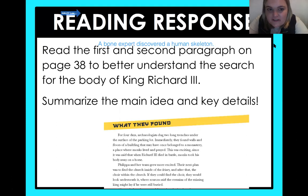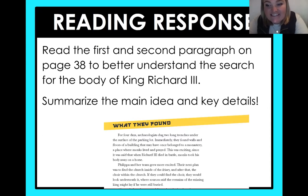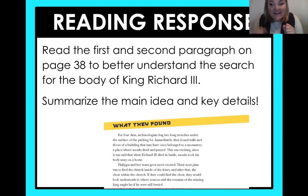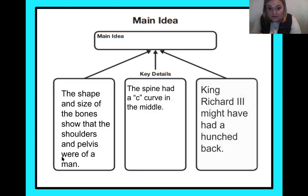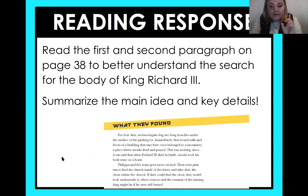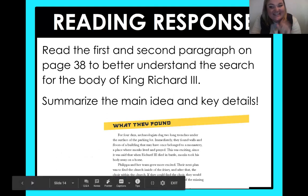Now let's see what we've got here. We are on to your reading response — it is your turn, fourth graders. You're going to read the first and second paragraph on page 38, which I have below, to better understand the search for the body of King Richard III. You're going to summarize the main idea and key details. If you put it in the main idea and key details chart, don't leave it in the chart — that's not a summary, that's just how we organize. Once you organize your thoughts, then turn it into a paragraph. Now it's your turn. I believe in you — you've got this. See you guys next time. Bye!